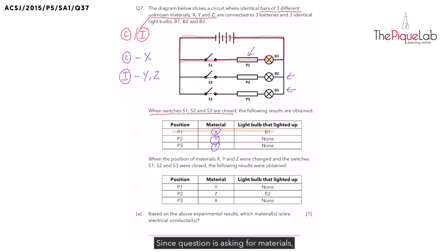Since question A is asking for materials which are electrical conductors, many students, without even taking a look at the second table here, they are going to write the answer as only X. We are going to see why this is wrong in a while.